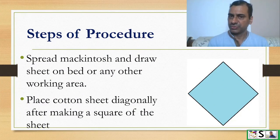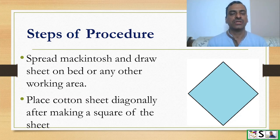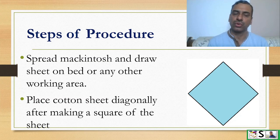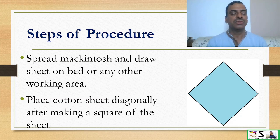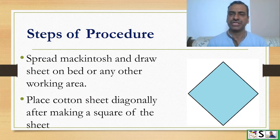Steps of procedure — first of all, we will spread a Macintosh with draw sheet on the bed or any other working area. Now we will place the cotton sheet diagonally after making a square of the sheet, or a square sheet may also be taken.